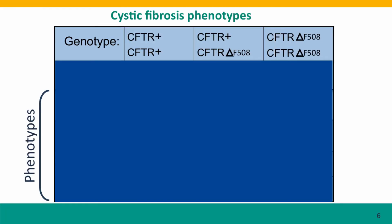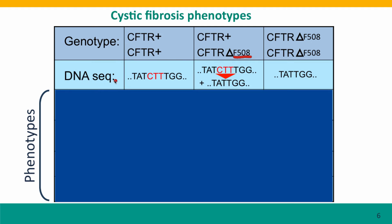Finally, here's our cystic fibrosis situation. We're thinking about the common delta F508 mutation that deletes one codon — three base pairs. Here are the genotypes and DNA sequences: the wild-type individual has both copies with the full base pairs, the homozygous mutant is missing those base pairs, and the heterozygote has both — one copy of each DNA sequence in all their cells.